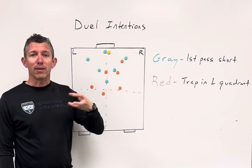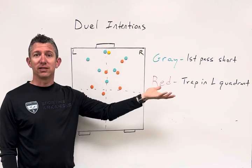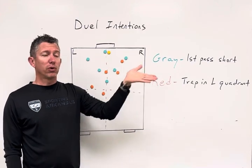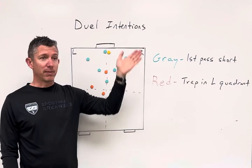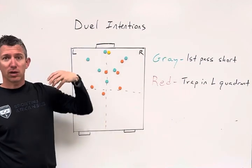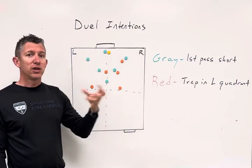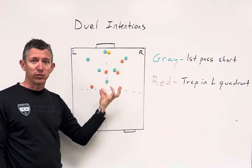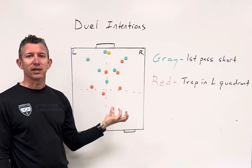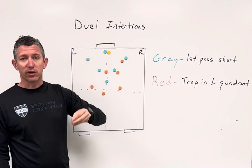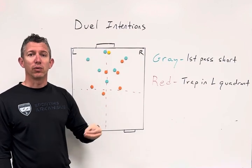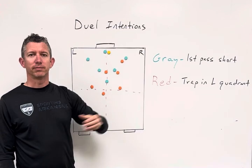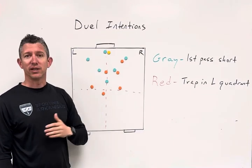It creates a more realistic gameplay scenario that we're likely to see on game day. On game day we don't know exactly what the opposing team is trying to do — they might try to play short, they might try to play long. So how can we create opportunities that produce more realistic gameplay scenarios relevant to what we do, and that transfer into the game on game day? Dual intentions.